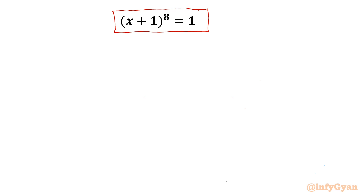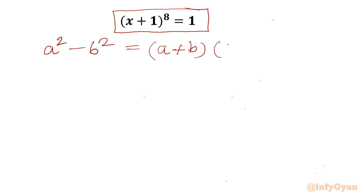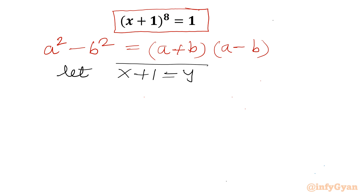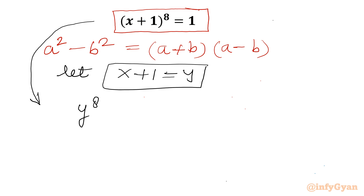Let's get started by writing the most powerful algebraic identity: a² - b² = (a + b)(a - b). We will use this identity while solving. Now let us consider our substitution: let x + 1 = y, so our equation will become y^8 = 1.